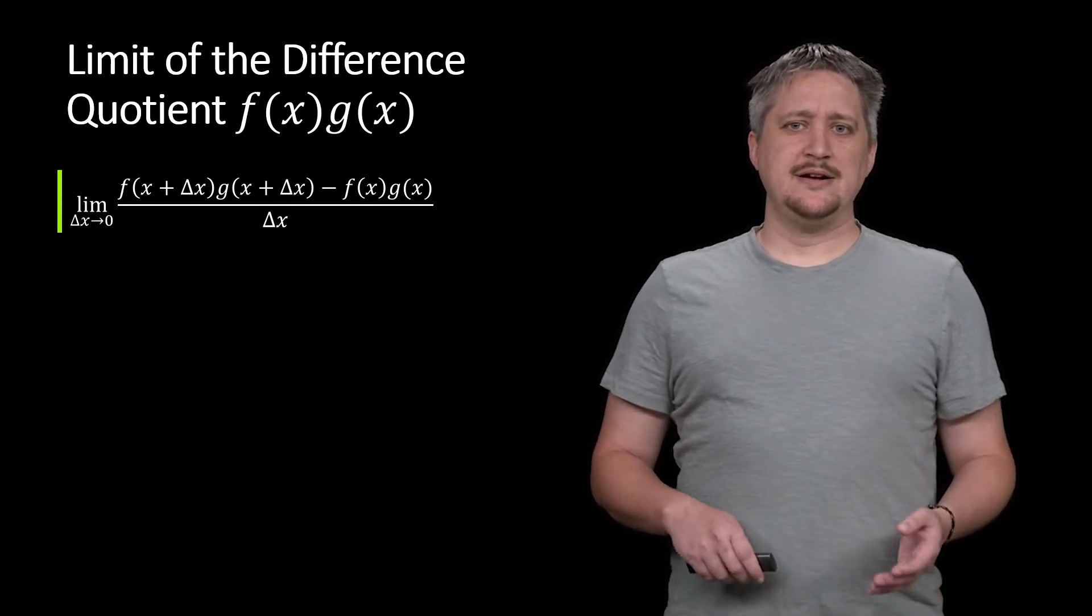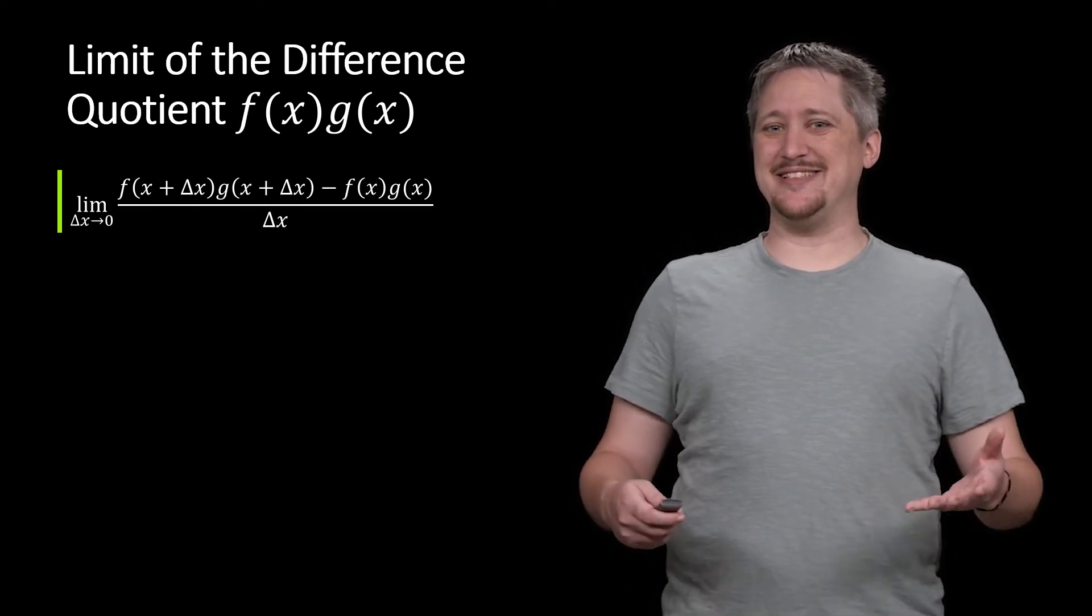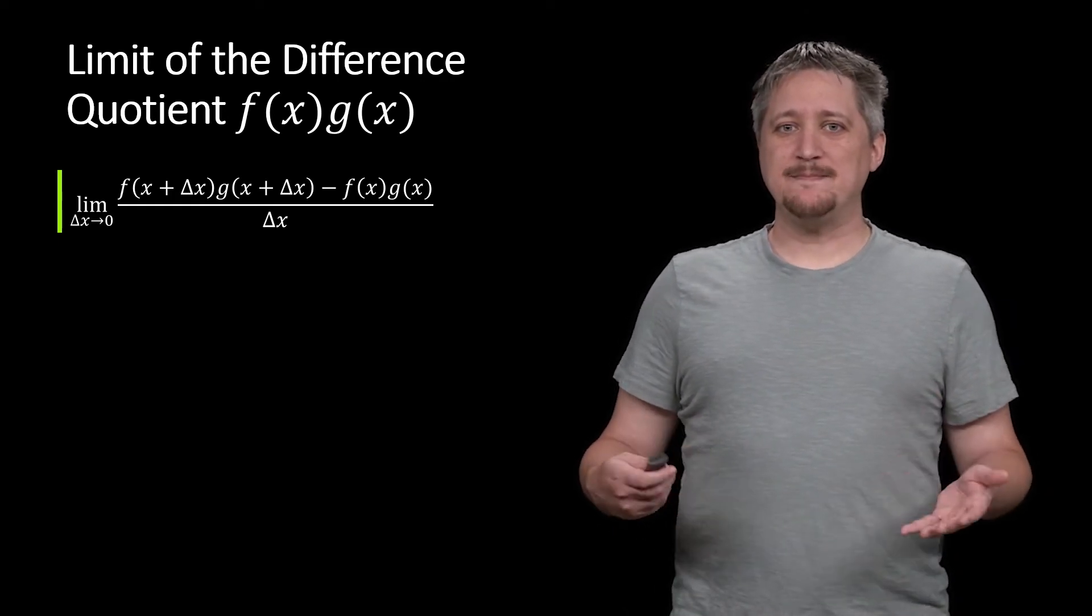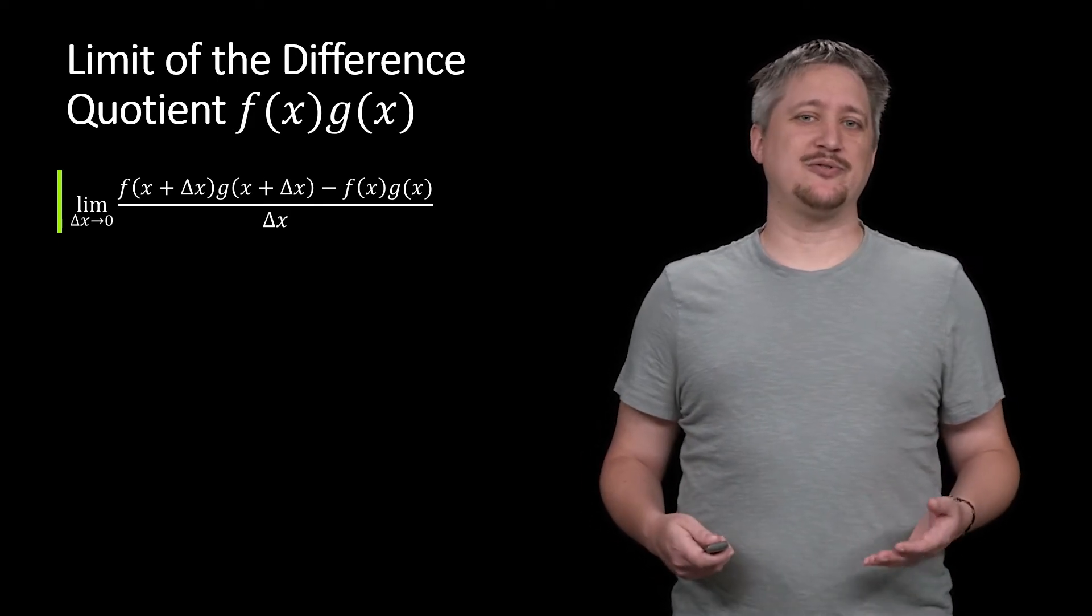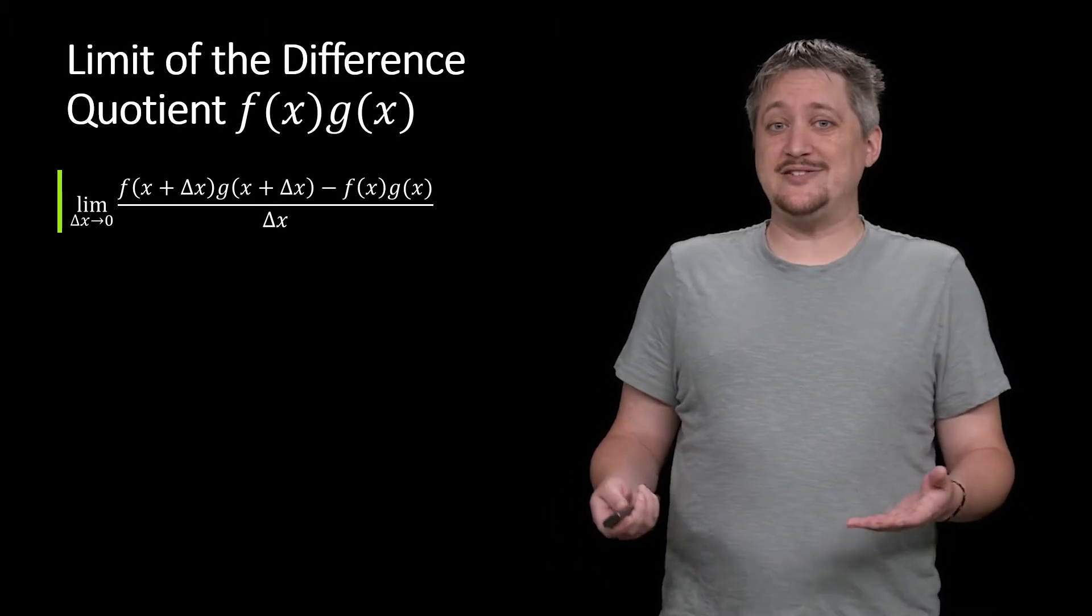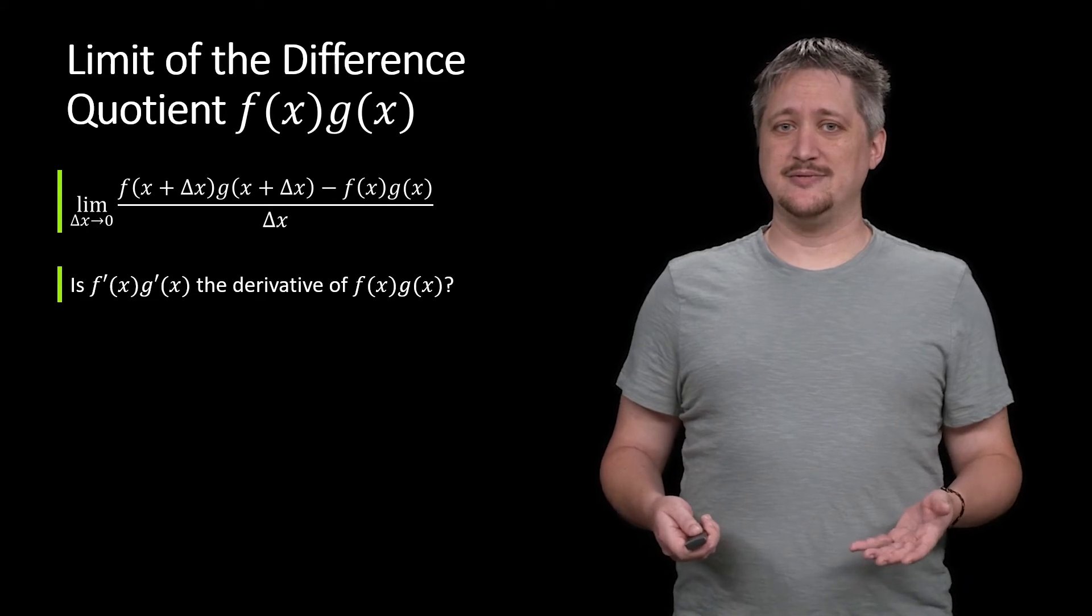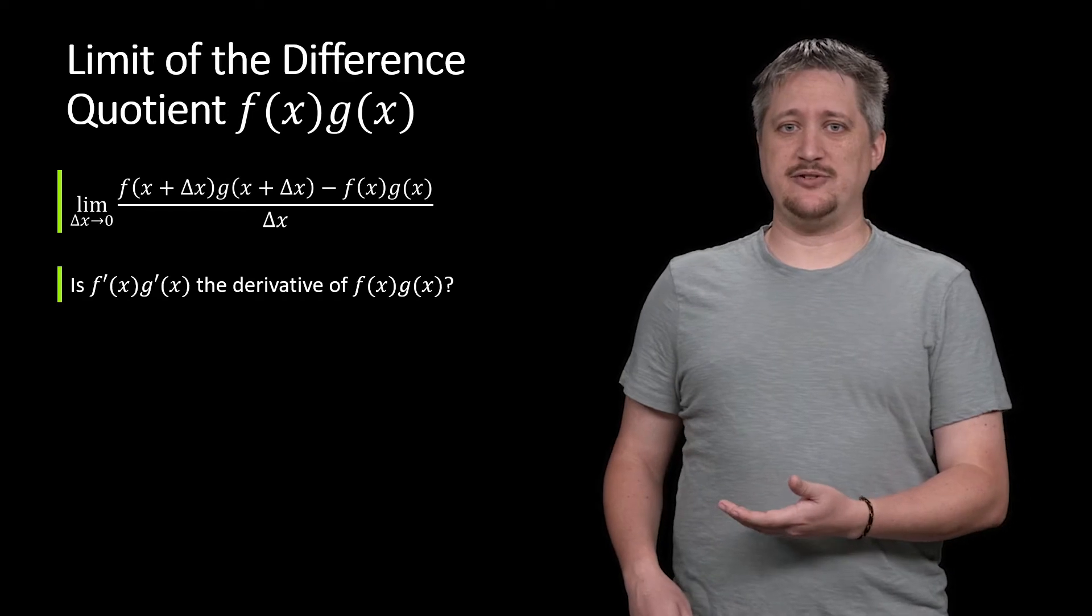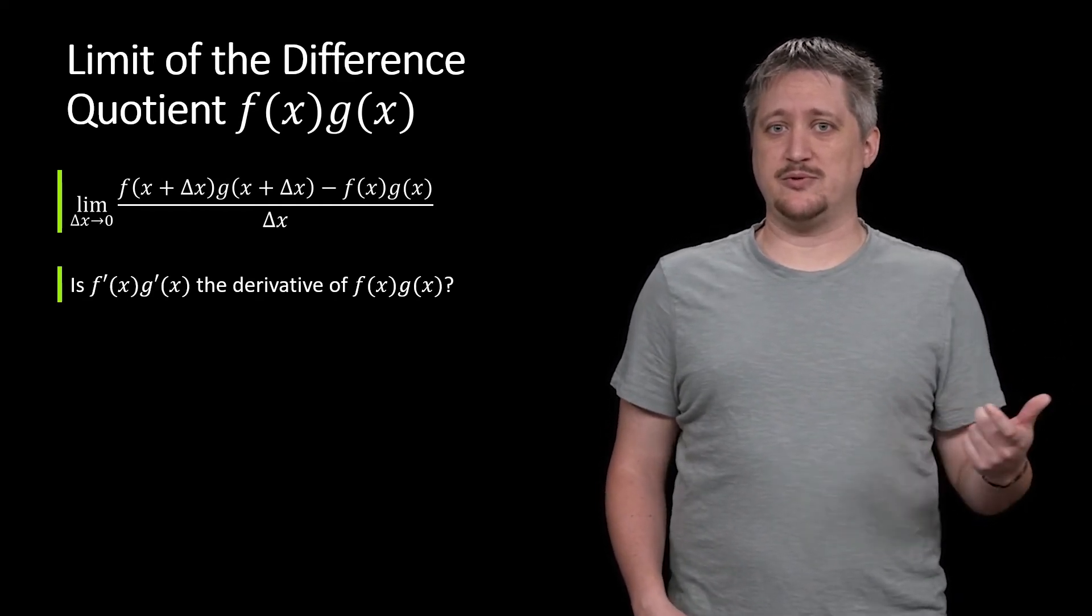Now I have claimed, without any justification thus far, that the product rule doesn't just translate directly from limits. But since we've seen it work with sums and differences and constant multiples, it is worth just trying it and seeing what happens. It worked well before, it's worth at least trying to see if it works well now.